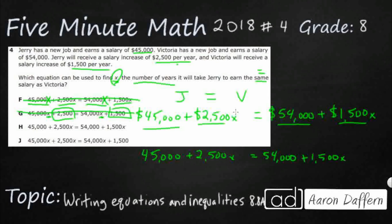So H has got $45,000, plus $2,500 raise. Looking good. $54,000 plus, yeah, that. Okay, H is looking good. Let's check J.